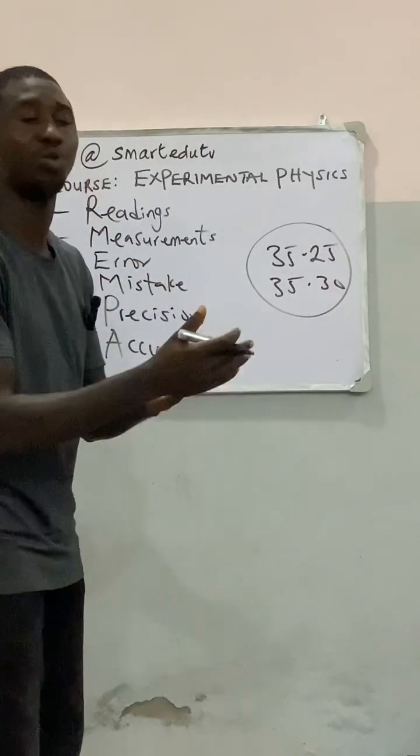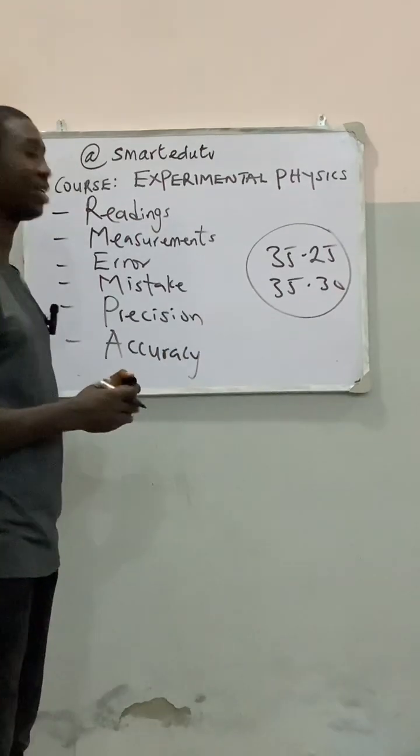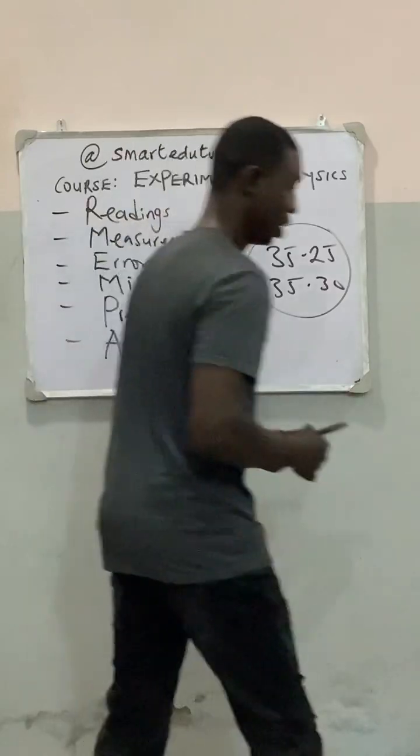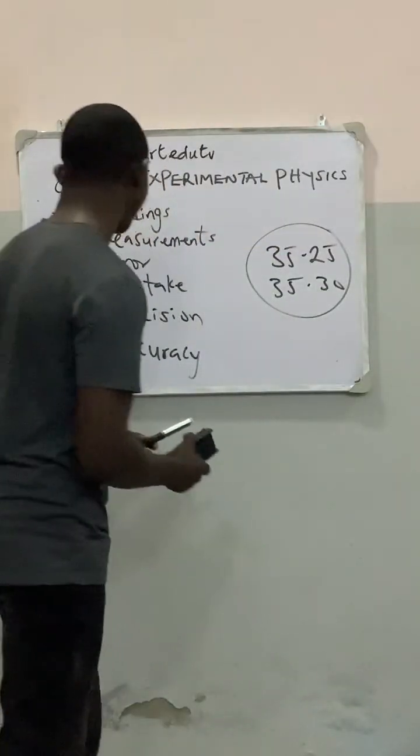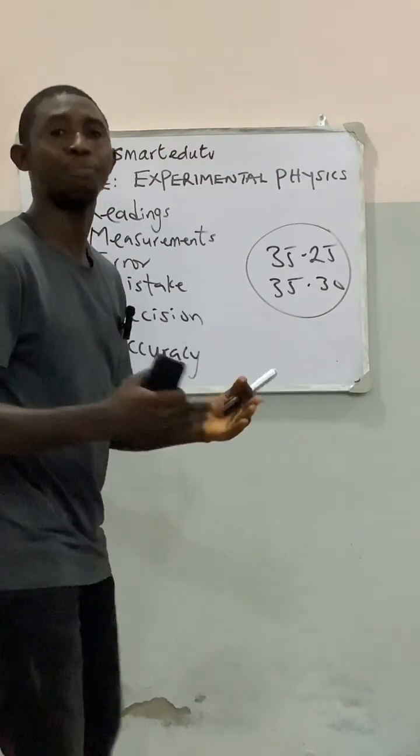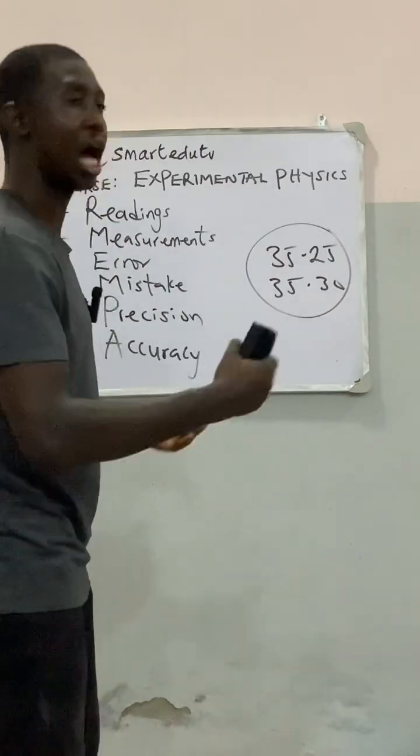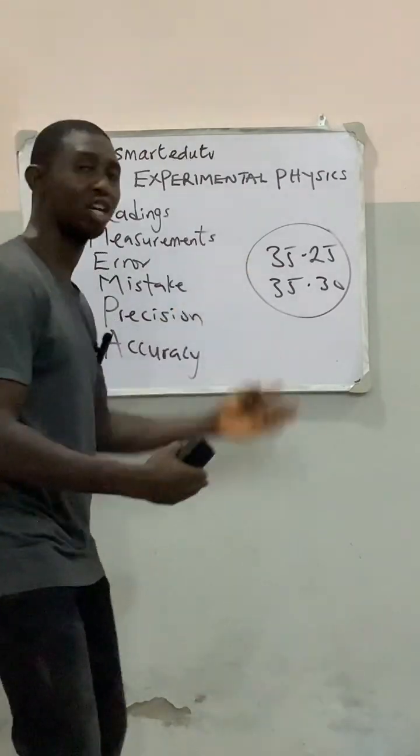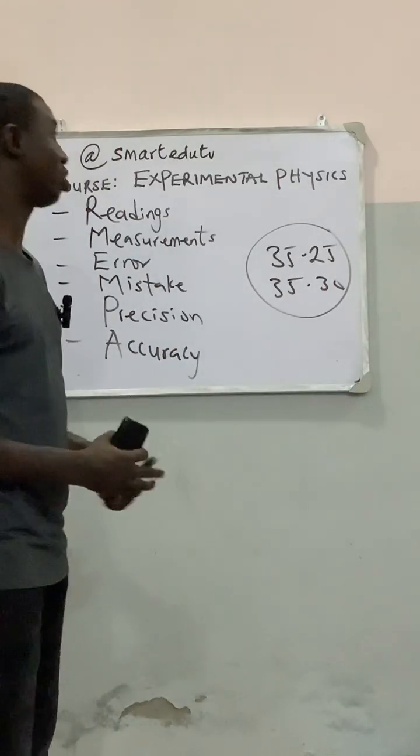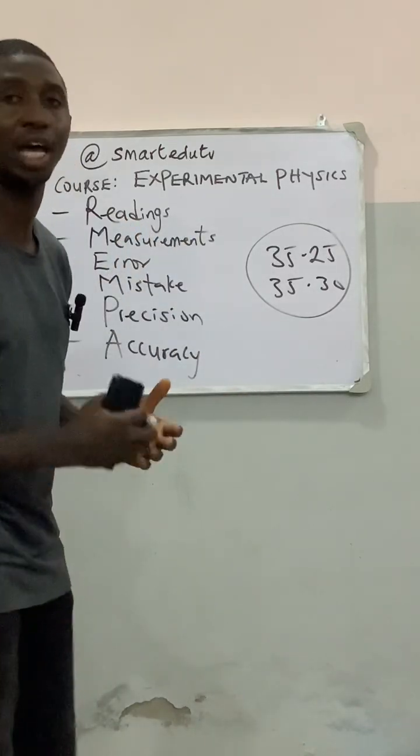The next we are going to look at is accuracy. What do we mean by accuracy? Accuracy is simply the closeness of measured value to the standard value. How close is a measured value to the standard value? That is what we mean by accuracy.